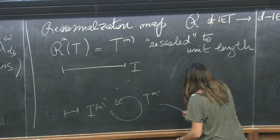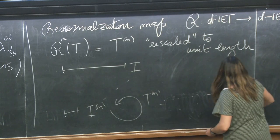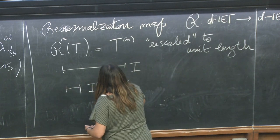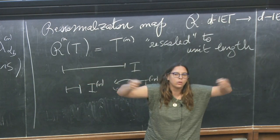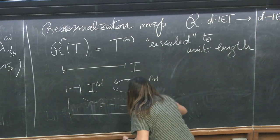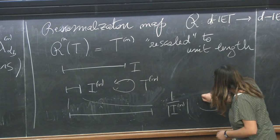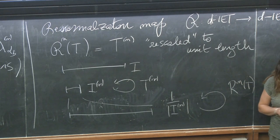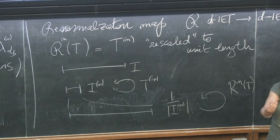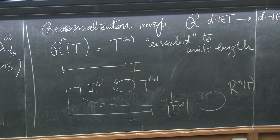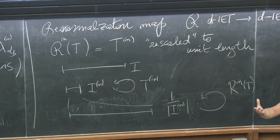The picture is: you have an IET, go to a small scale, get an induced map, then zoom it back. You take the small interval I_N with the induced map, multiply by 1 over the length to make it length 1, and get R_N of T. Every time the induced object is of the same nature as the original — here it's an IET — you can make it length 1 and have a renormalization from the space of IETs to itself.